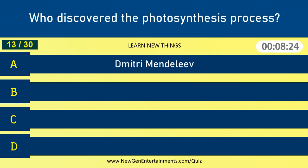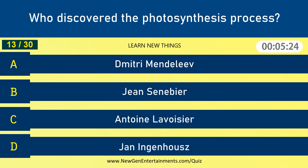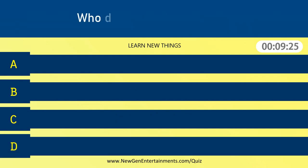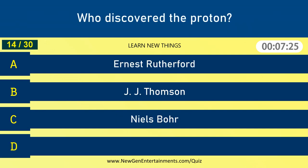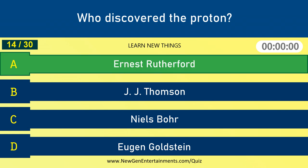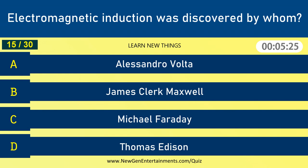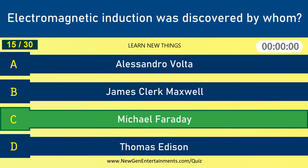Who discovered the photosynthesis process? Jan Ingenhousz. Who discovered the proton? Ernest Rutherford. Electromagnetic induction was discovered by whom? Michael Faraday.